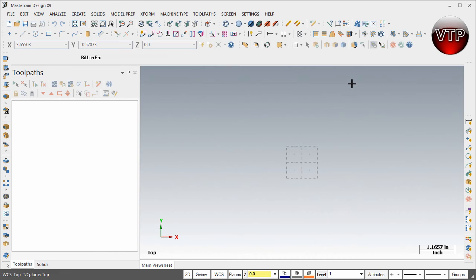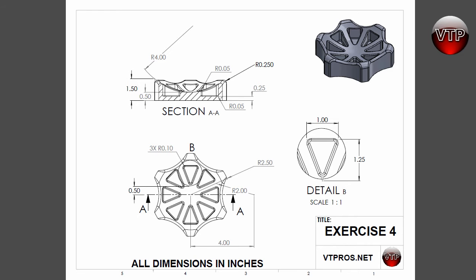All right, welcome back. Now we are ready to start by creating the first part of our sketch in exercise number four. Let's go ahead and open up the drawing for exercise number four. This is a drawing in PDF format and it is part of your exercise files folder, so make sure you open that up, print it, and have it in front of you as I'm going through this exercise.